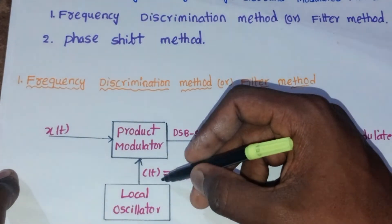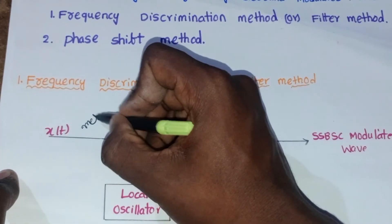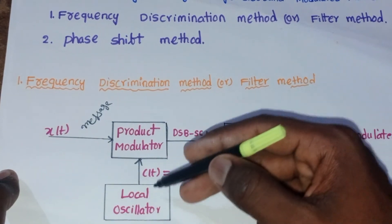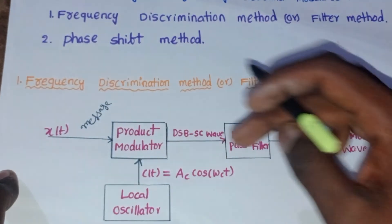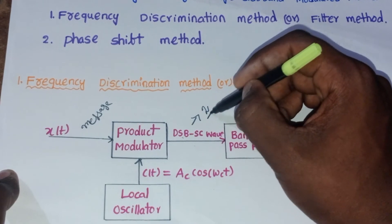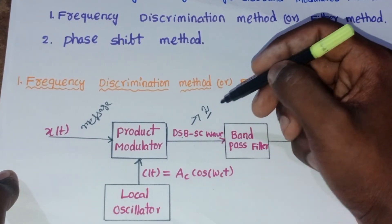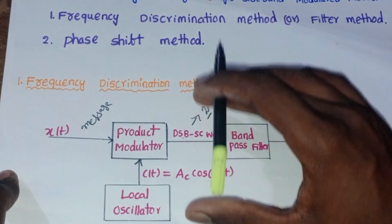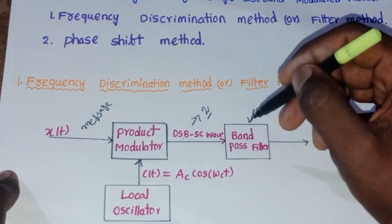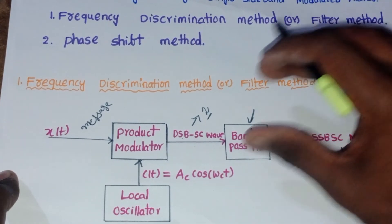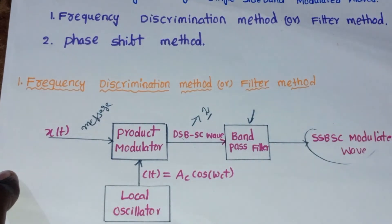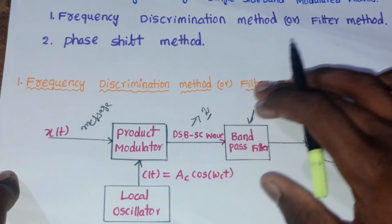In the block diagram, the product modulator takes inputs x(t) (the message signal) and c(t) = Ac·cos(ωc·t) (the carrier). The product modulator output is the DSB-SC wave, which contains two sidebands. To generate the SSB-SC wave, we need to suppress one sideband, so a Band Pass Filter is applied. The Band Pass Filter suppresses either the lower or upper sideband, and its output contains only one sideband — that is the SSB-SC modulated wave.